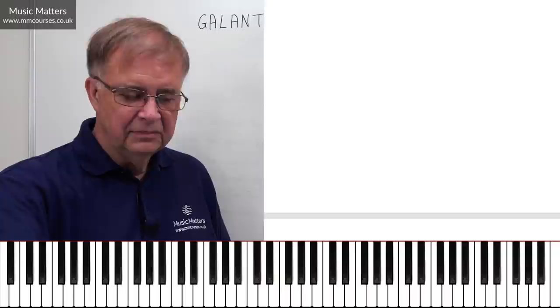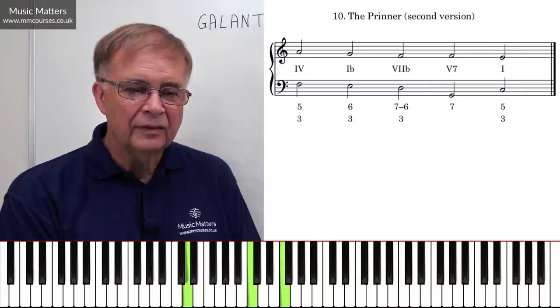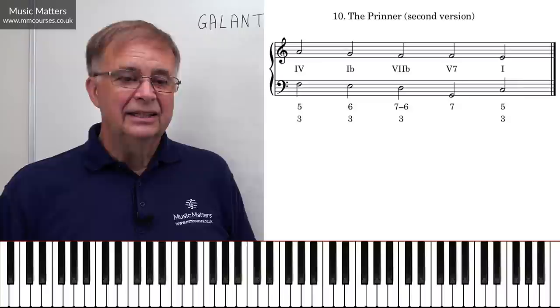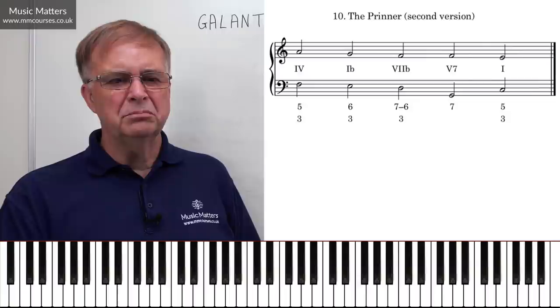There's a second version of this where we go IV to Ib, with that VIIb again with a 7-6 suspension, and then that can prepare you from V-V-V onto a I. So that's just extending things a little bit into the cadence — useful when you've got an extra note in your version of the pattern.